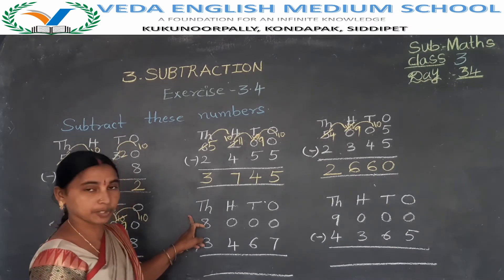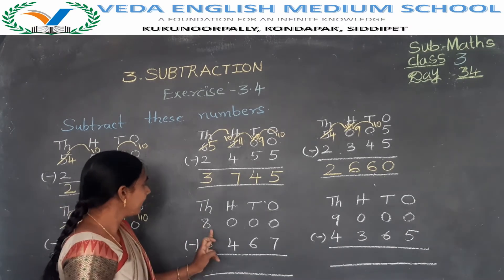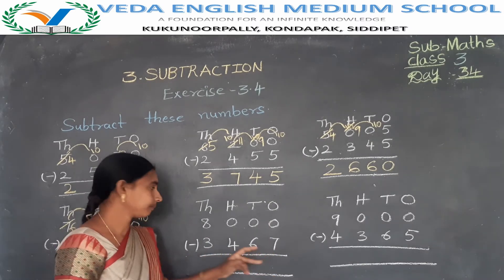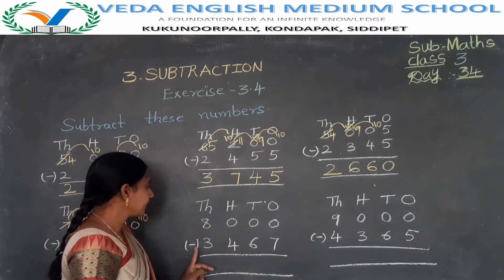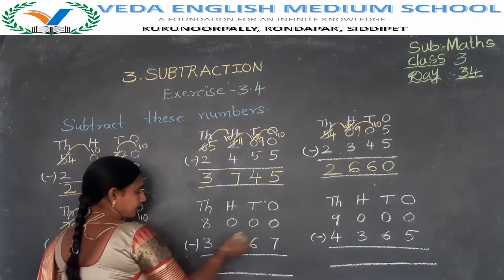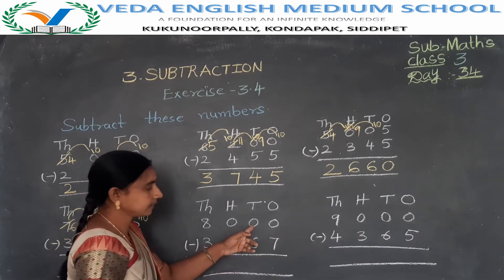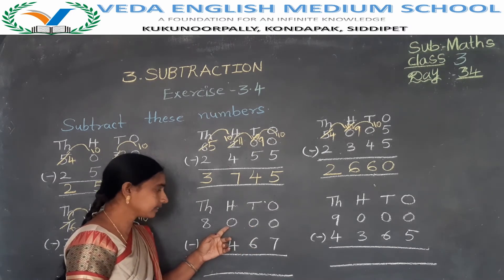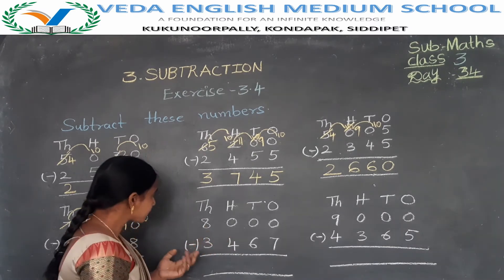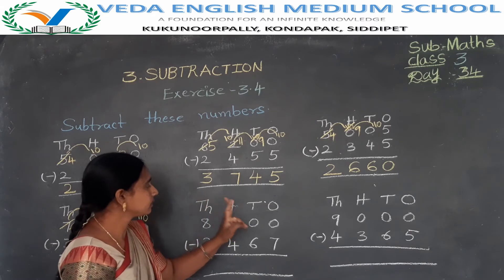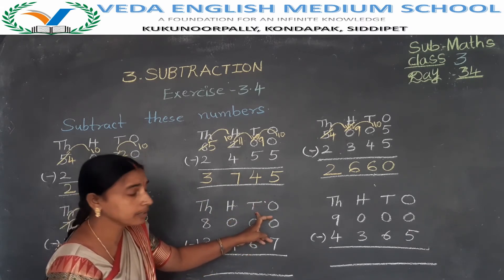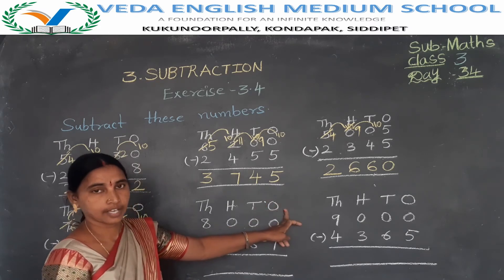Next problem: 8000 minus 3467. In the ones place: 0 minus 7. In the tens place also 0. In the hundreds place also 0. First take a borrow from the thousands place to the hundreds place, then from the hundreds place to the tens place, then from the tens place to the ones place.